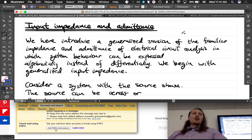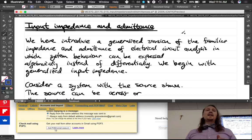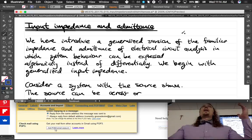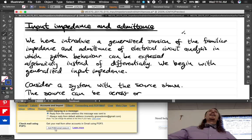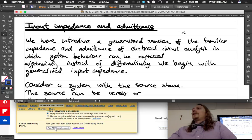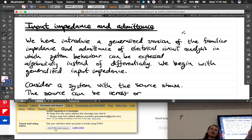Speaking of impedance, thank you Jordan. We here introduce a generalized version of the familiar impedance and admittance of electrical circuit analysis in which system behavior can be expressed algebraically instead of differentially. Remember when we did circuit analysis and I said you can just use impedance and you don't even have to find a differential equation? We're going to do essentially that again. Just a little bit more general.